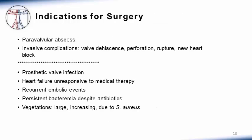General indications for surgery include complications related directly to the heart such as abscess, valve dehiscence, valve perforation, rupture, and new heart block. Other indications considered on an individual basis include the presence of prosthetic valve infection, heart failure unresponsive to medical therapy, recurrent embolic events, persistent bacteremia despite antibiotics, and vegetations greater than one centimeter, increasing in size, or due to staph aureus because of the high risk for embolization.